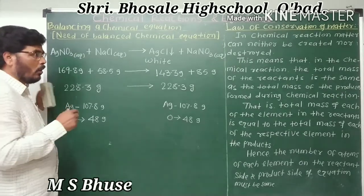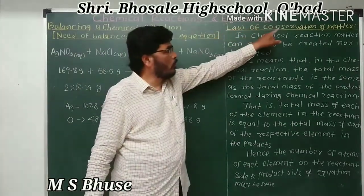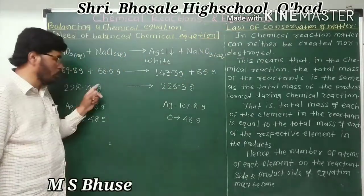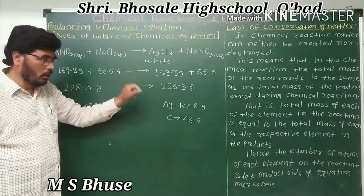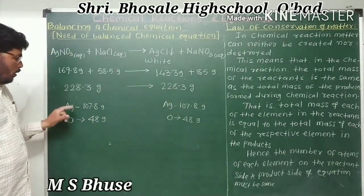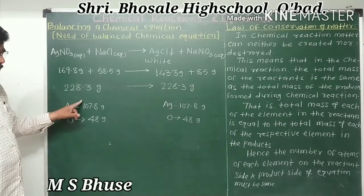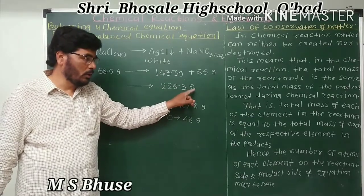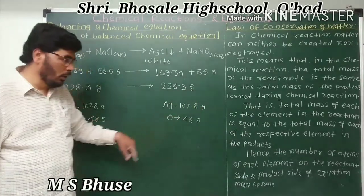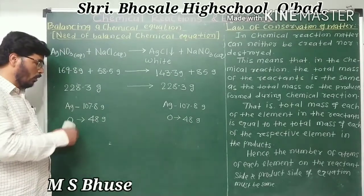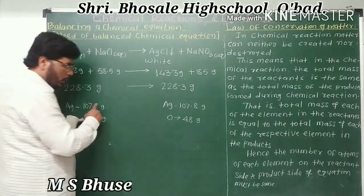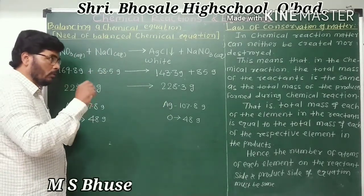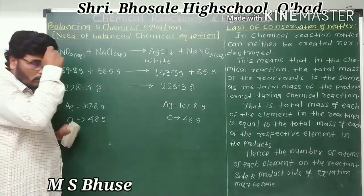Because all chemical reactions follow the law of conservation of matter, the total mass of reactants equals the total mass of products. Therefore, the total mass of each element in the reactants equals the total mass of each respective element in the products, and therefore the total number of atoms of each element on the reactant side and product side is equal. Therefore, the chemical equation must be balanced.